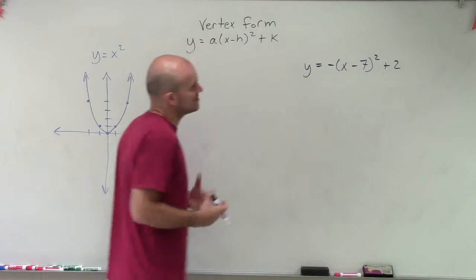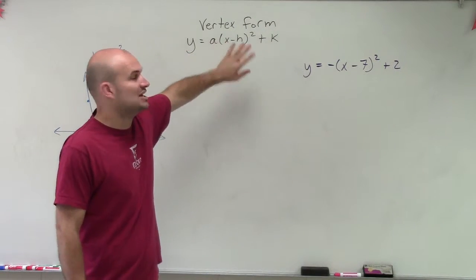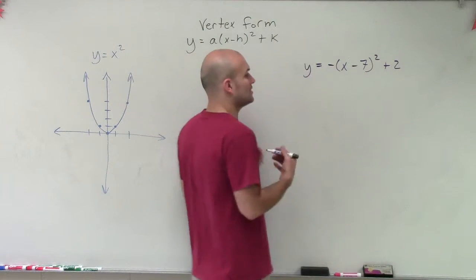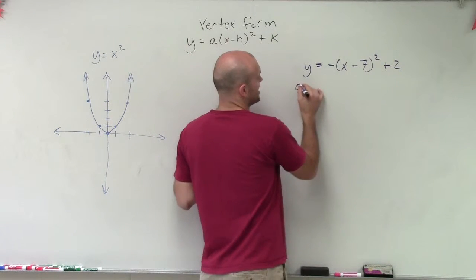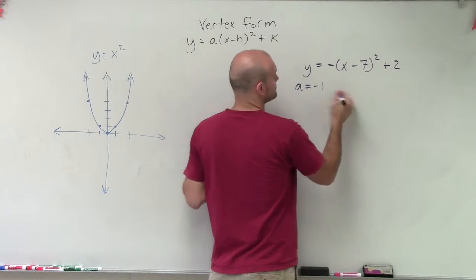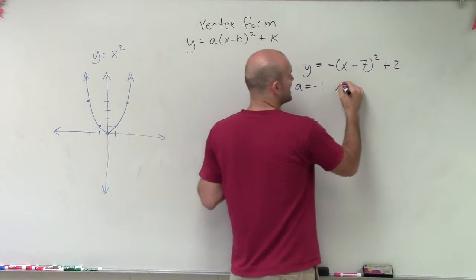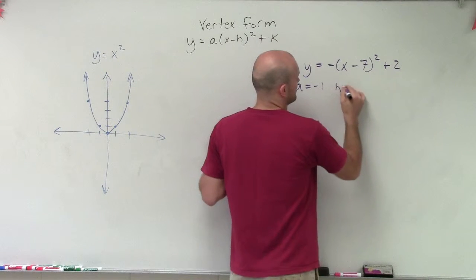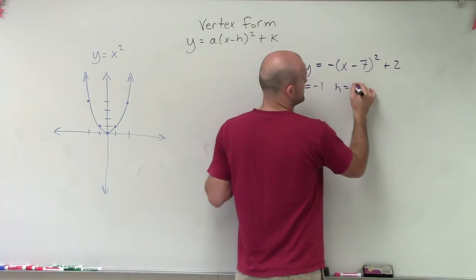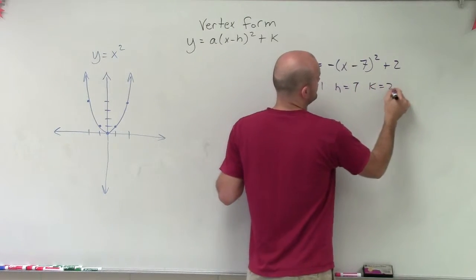So when doing this, the main important thing in vertex form is to make sure we can understand what the a, h, and k are going to be and understand those transformations. So in this case, I have a equals negative 1, my h equals 7, and my k equals 2.